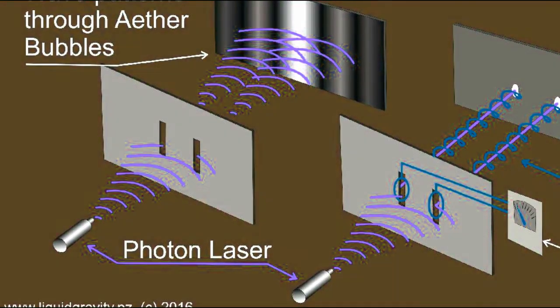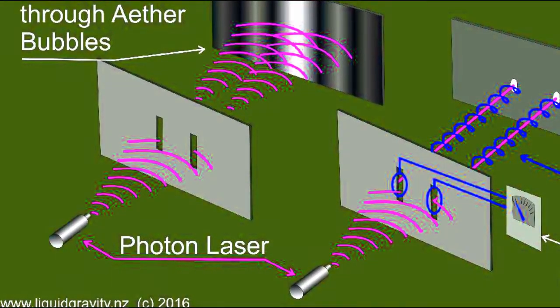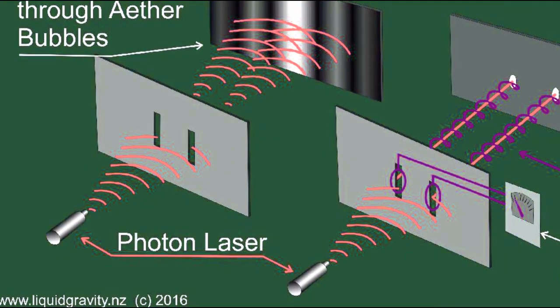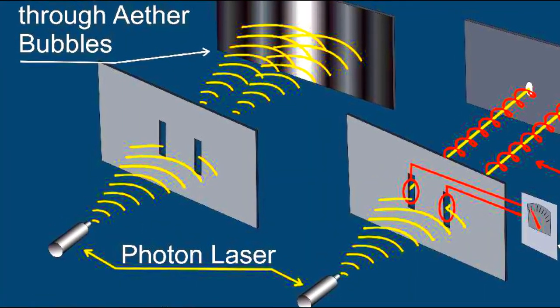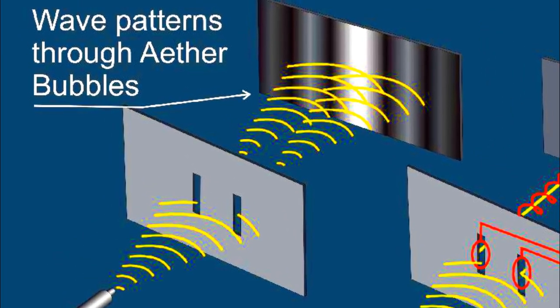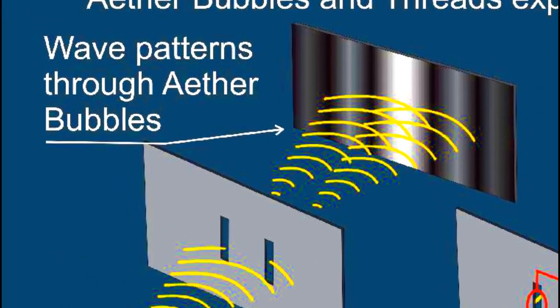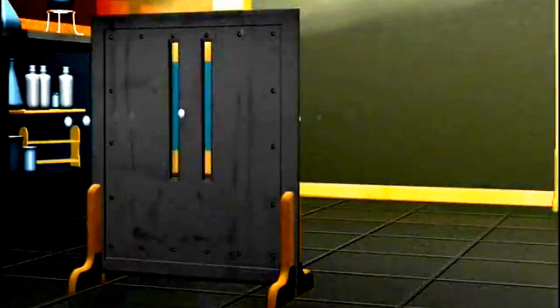This is where things start to get interesting. When this experiment was initially performed, the pattern that began to emerge was that of an interference pattern. Without knowing for sure how single photons were able to create an interference pattern, it seemed that single photons were passing through both slits simultaneously.